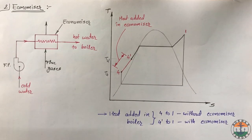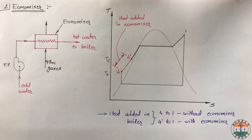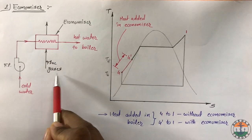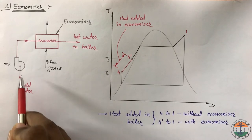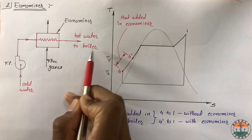The second boiler accessory is economizer. In a boiler, a lot of heat goes out to the atmosphere with flue gases. Economizer is a heat exchanger in which some of the heat of flue gases is recovered and is used to raise the temperature of feed water being supplied to the boiler.